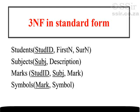Student ID is the primary key, and the fields dependent on it form the 'students' table. Subject is the primary key of its table with description as the dependent field. Student ID and subject together form the primary key of the 'marks' table with mark as the dependent field. Finally, in the 'symbols' table, mark is the primary key and symbol is the dependent field.